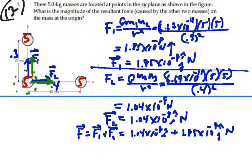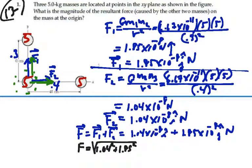We want to find the magnitude of this resultant force. We have the two components, so the magnitude is each component squared, added together, then square root. So the square root of 1.04 squared plus 1.85 squared, times 10⁻⁸, gives us a magnitude of 2.12×10⁻⁸ newtons. That is the magnitude of the net force on the mass at the origin.